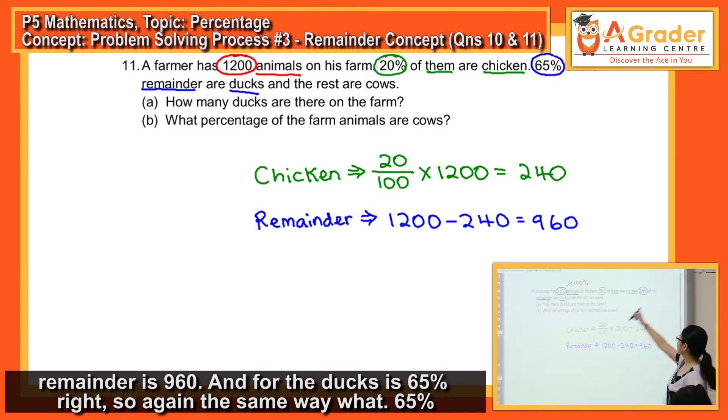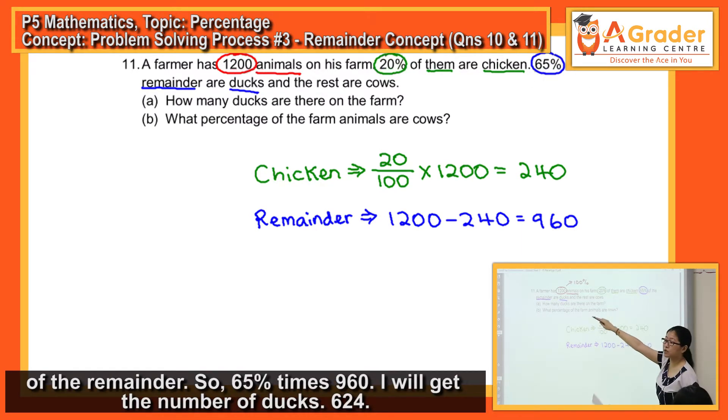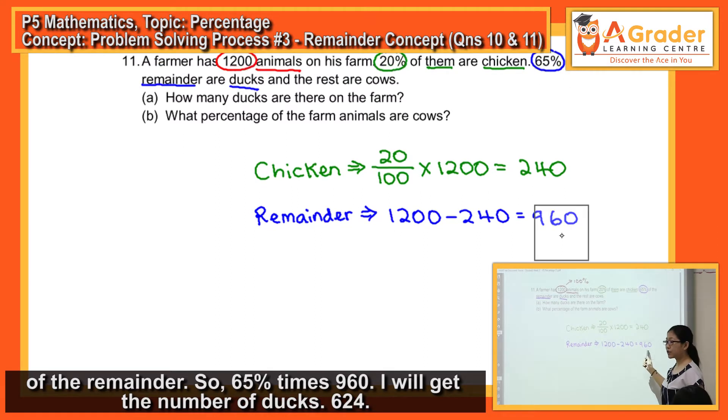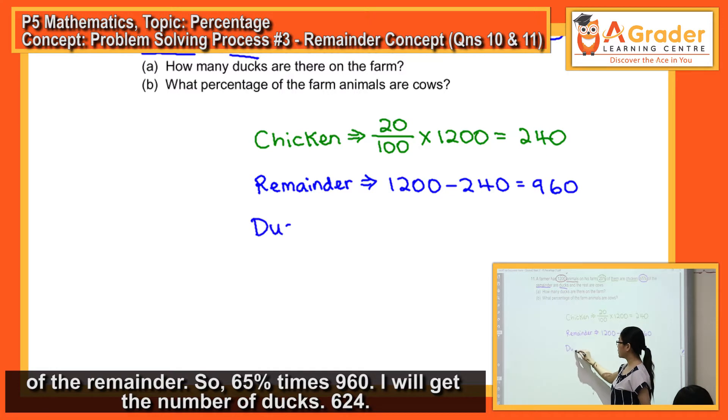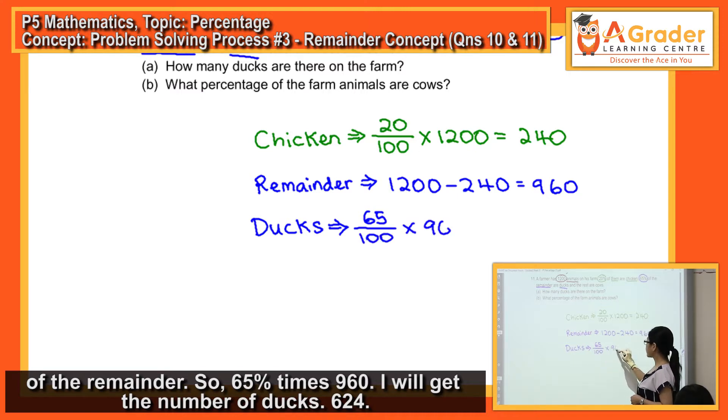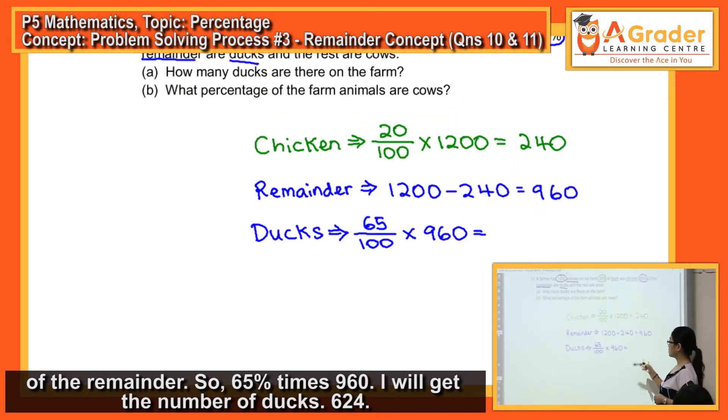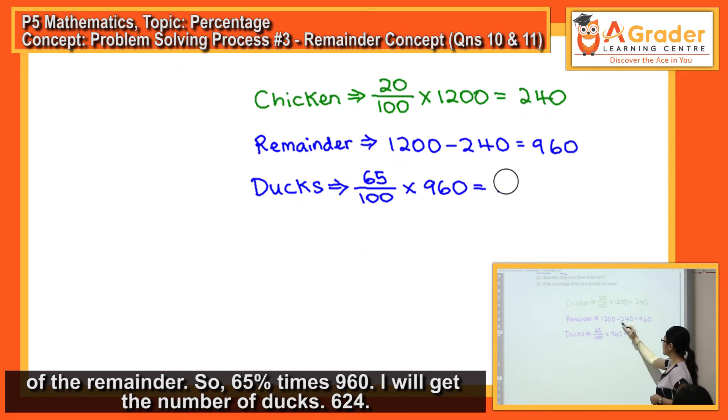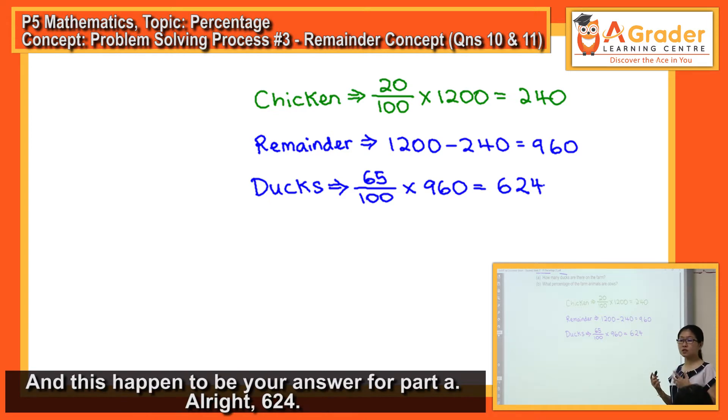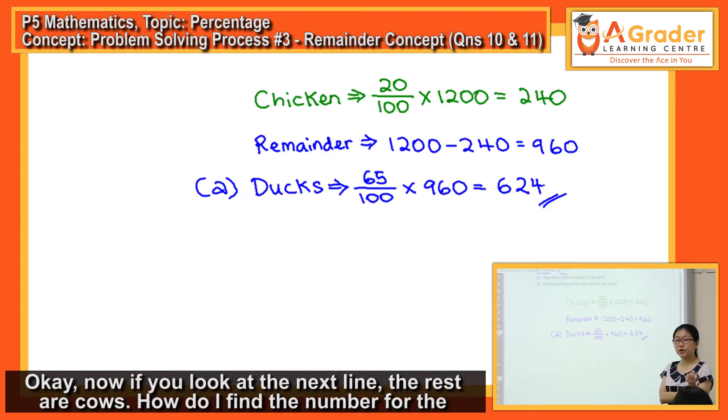And for the ducks is 65%. So again, the same way: 65% of the remainder, so 65% times 960. I will get the number of ducks: 65/100 × 960 = 624. And this happens to be your answer for part A. 624.